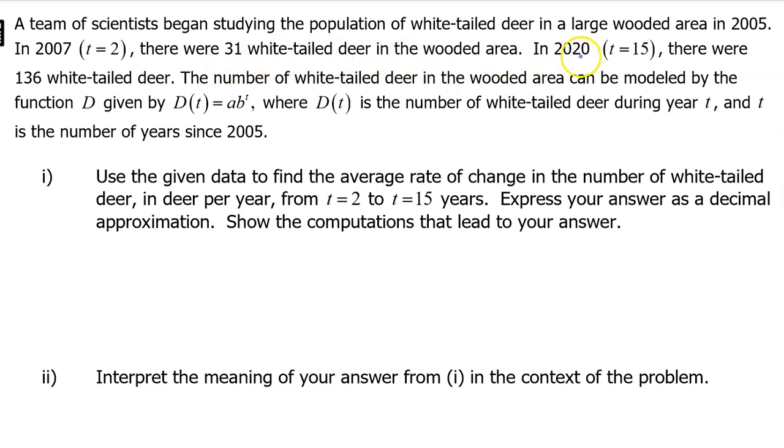In the year 2020, t equals 15, there were 136 white-tailed deer. The number of white-tailed deer in the wooded area can be modeled by the function d, given by d of t equals a times b to the t power, where d of t is the number of white-tailed deer during the year t, and t is the number of years since 2005.